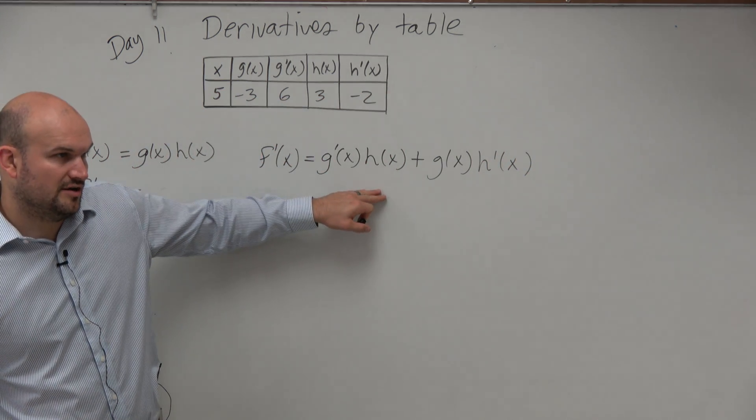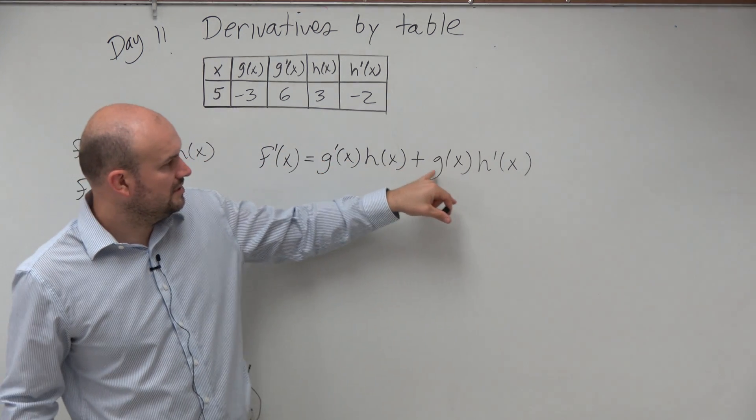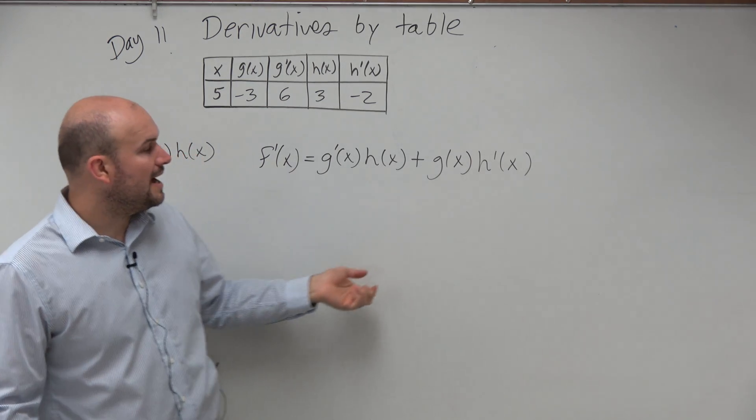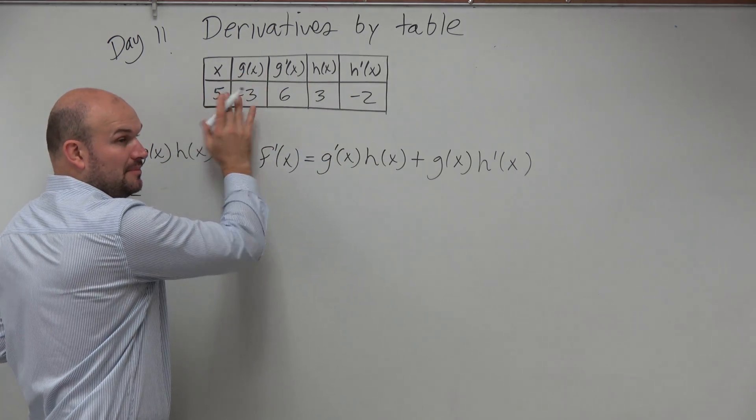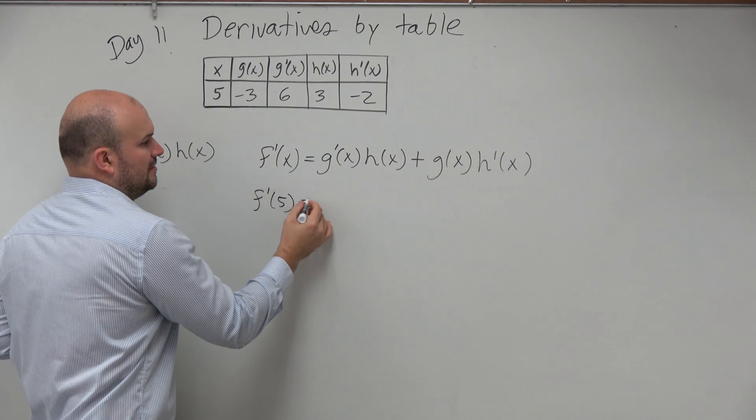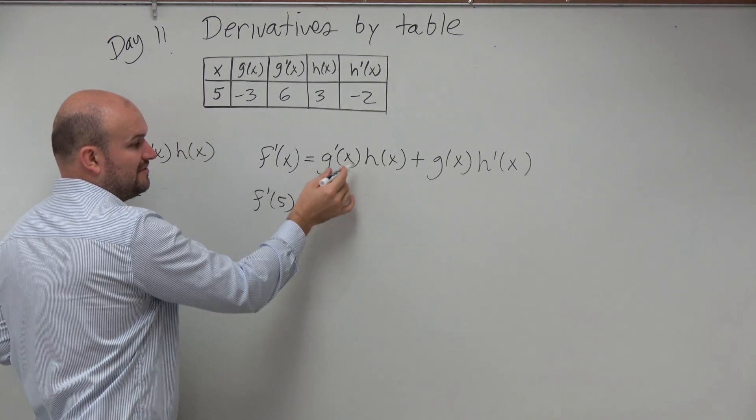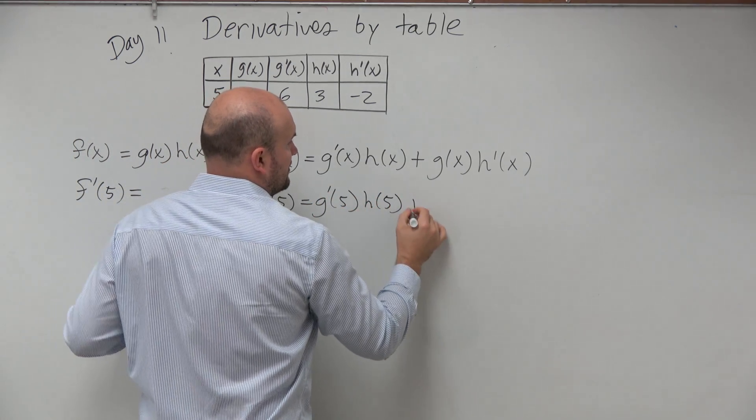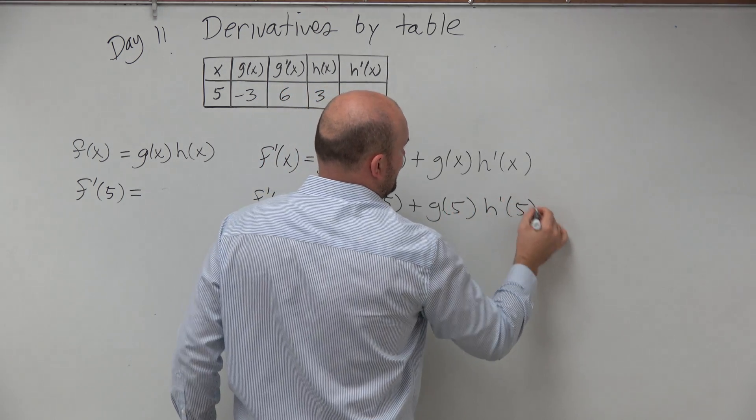Does everybody at least follow me just by using the product rule? Taking the derivative of our first and then adding from the second. Now, what I can do is now I want to go into my table and then evaluate for all of my terms at f prime of 5. So now I need to figure out what is basically g prime of 5, right? So that's going to be g prime of 5 times h of 5 plus g of 5 times h prime of 5.